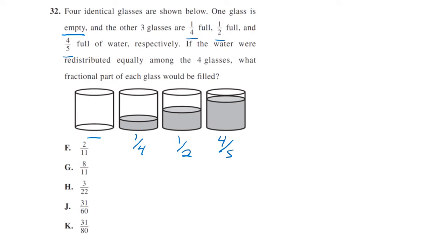If the water were redistributed equally among the four glasses, what fraction of each glass would be filled? We're going to divide all four of them by four, but we need to figure out how much we have so far. Let's get a common denominator. Our common denominator looks like it's going to be 20. So this one is 5/20, this one is 10/20, and this one is 16/20.